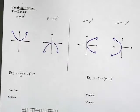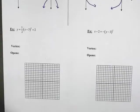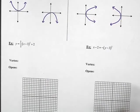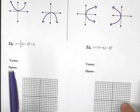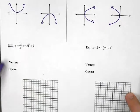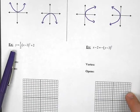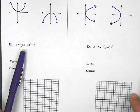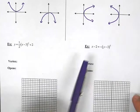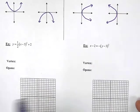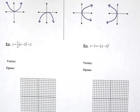Now as we do a couple of examples, notice everything's kind of split. On the left side, we have what we consider our normal parabolas, where it's y equals. And then we are going to do one over here where it's an x equals, just to kind of talk about it.